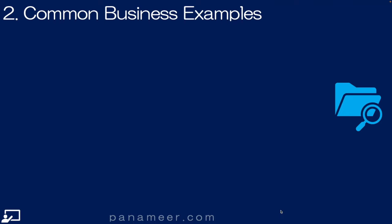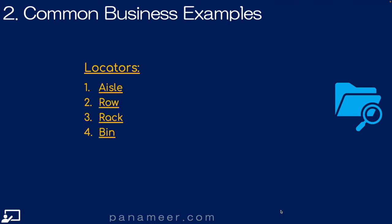Slide 2: Common business examples. Here are four common examples of Locators: Aisle, Row, Rack, and Bin. Locators are defined as the rest of inventory is defined during the inventory design process. Click the link above to watch a quick video explaining that inventory design process — meaning the whole process of defining before you enter anything inside Oracle Cloud.